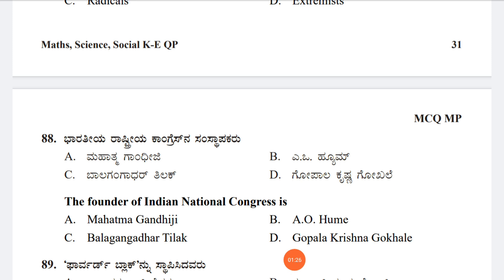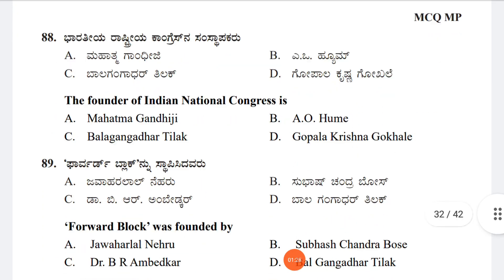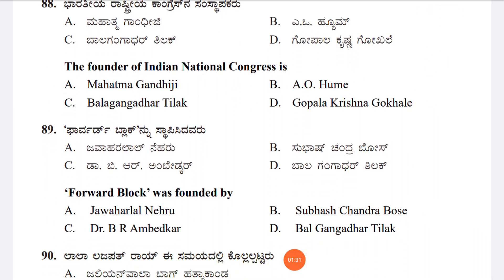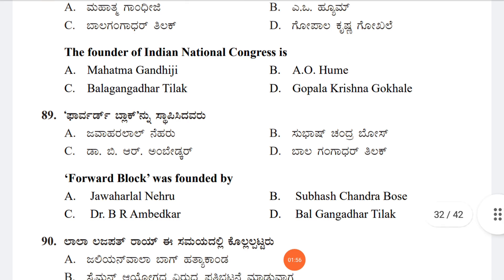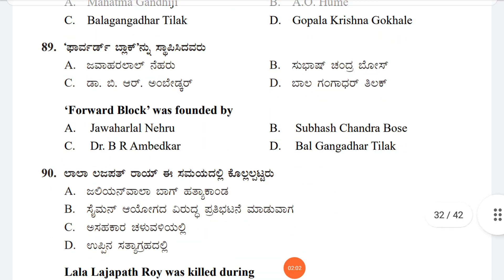Question 89: The Forward Block was founded by whom? Option A: Jawaharlal Nehru, Option B: Subhash Chandra Bose, Option C: Dr. B.R. Ambedkar, Option D: Bal Gangadhar Tilak. The answer is Option B, Subhash Chandra Bose.